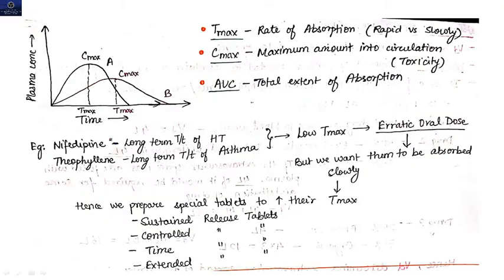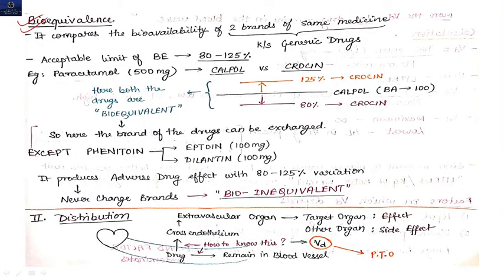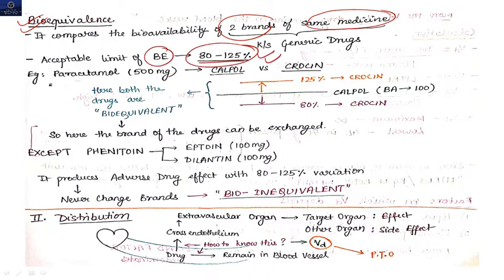Now moving to the next important term: bioequivalence. Bioequivalence compares the bioavailability of two brands of the same medicine. The acceptable limit of bioequivalence is 80% to 125%.